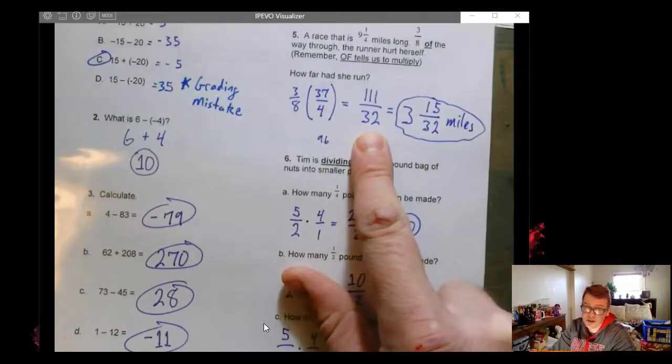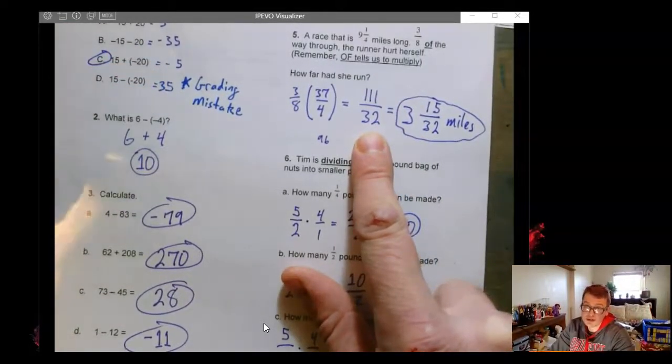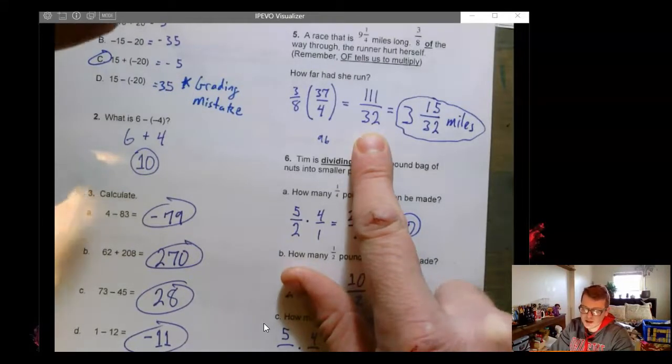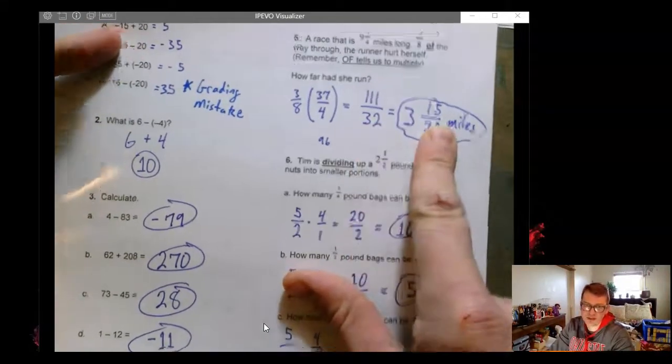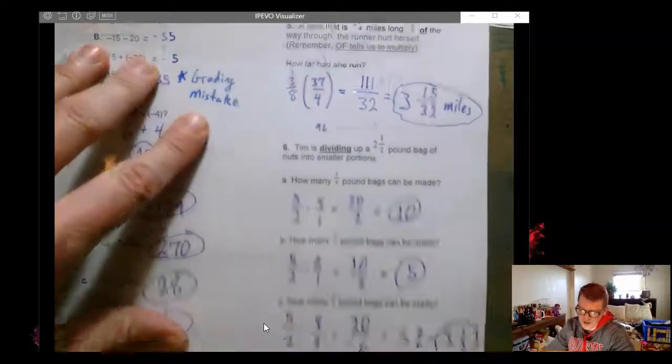So if we use a calculator to get that back into a mixed number, or we just say how many 32s are in 111. It would be 32, 64, 96. And that's as far as we can go with 15 left over. This one, a lot of us did pretty well on this.